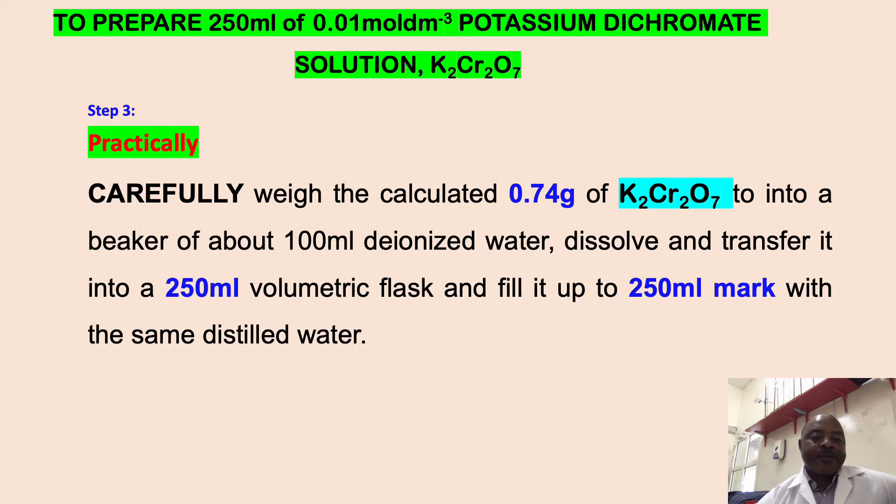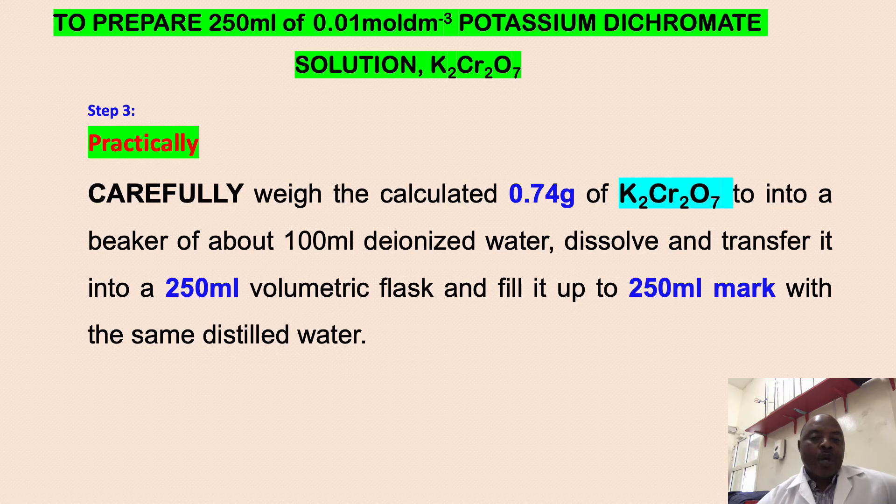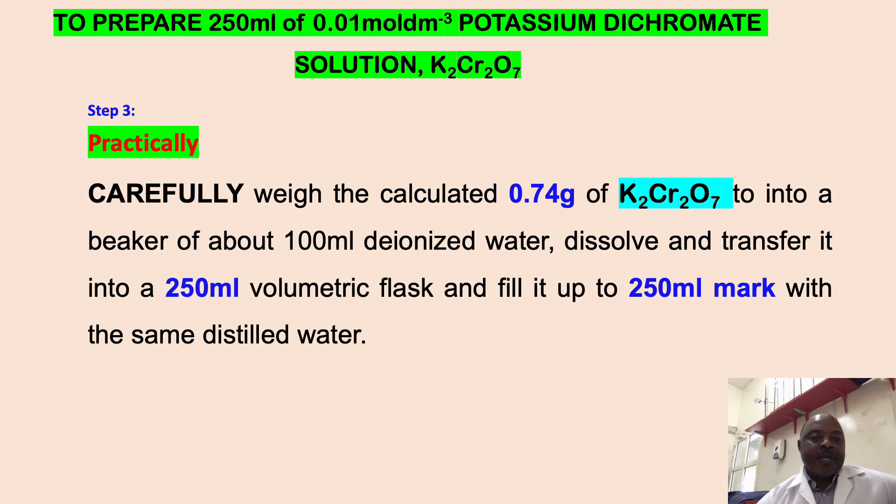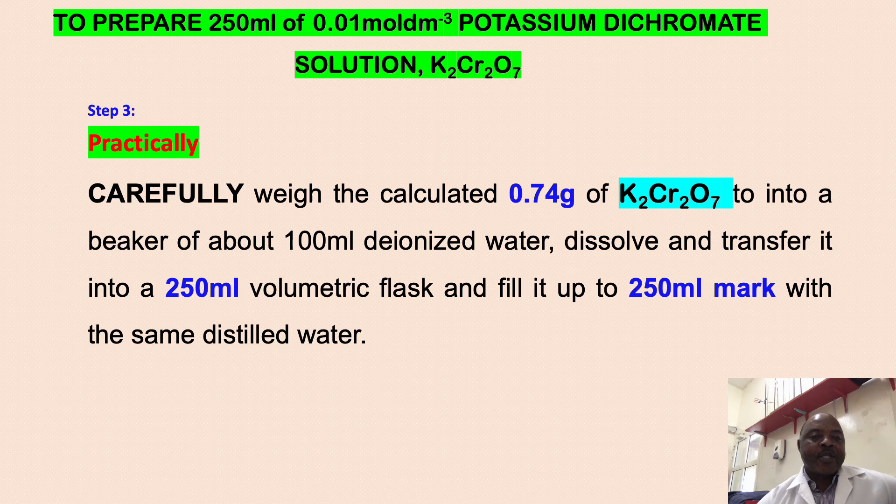Use the deionized water to fill the solution up to the 250 ml mark. At this level, you now have your 250 ml of 0.01 mol/dm³ potassium dichromate solution.